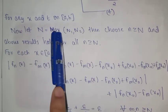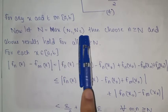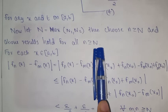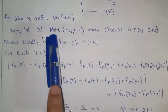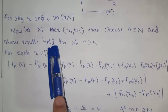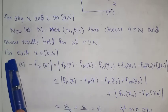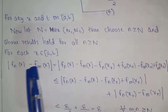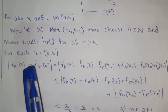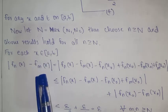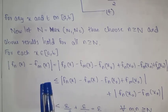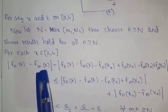Now let N = max(N1, N2). Then choose n ≥ N, and the above results hold for all n ≥ N. For each x in [a, b], we consider |fn(x) - fm(x)|. We have shown that the sequence fn satisfies the Cauchy criterion, with fn converging uniformly.